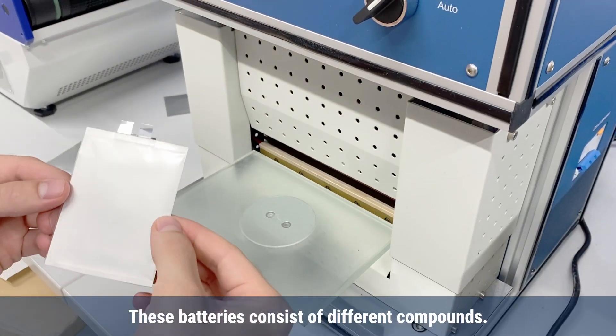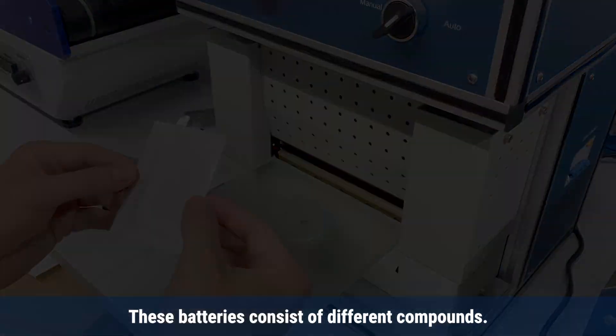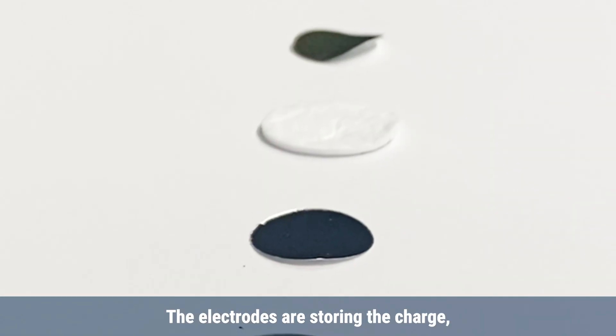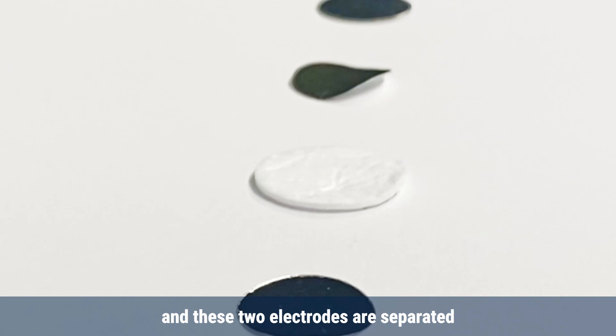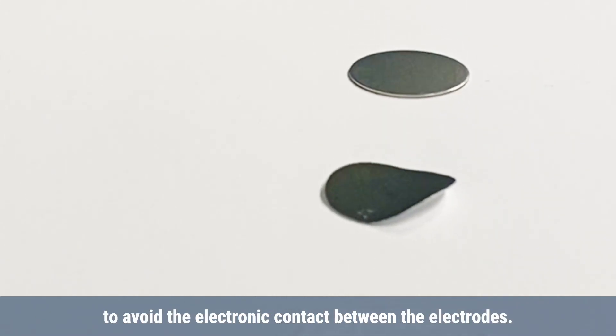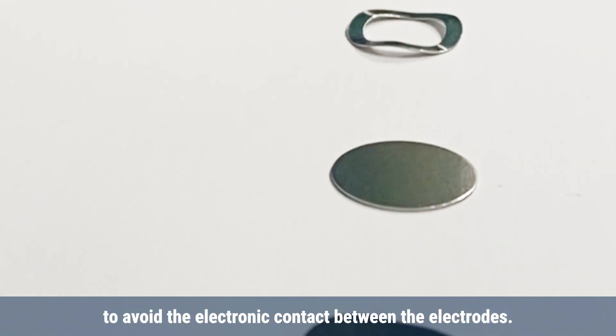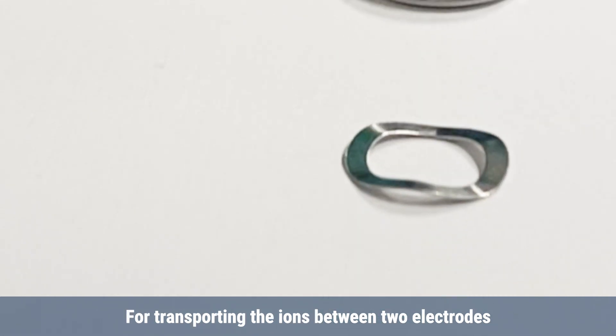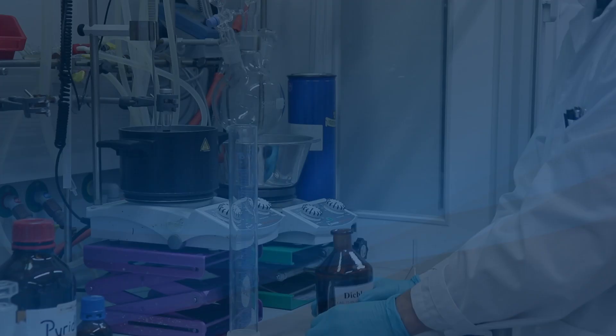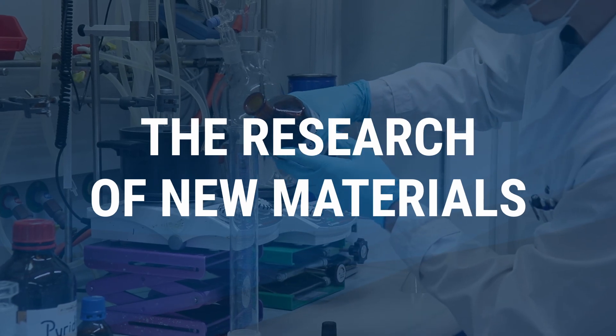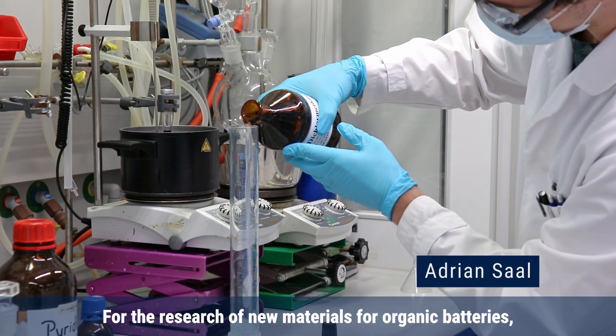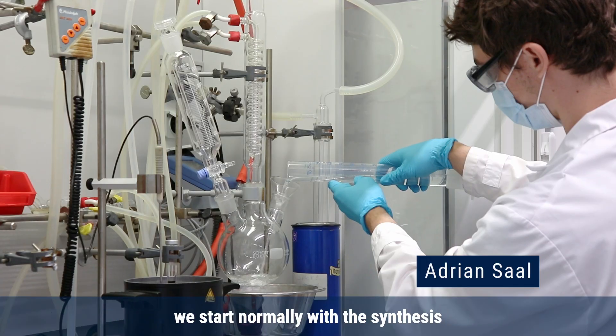These batteries consist of different compounds. There are two electrodes that store the charge, and these two electrodes are separated normally by a separator to avoid the electronic contact between the electrodes. For transporting the ions between the two electrodes, you use an electrolyte.